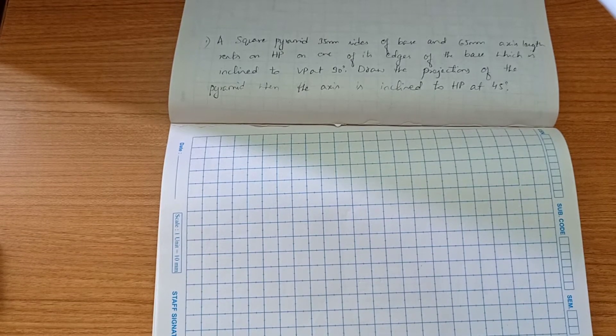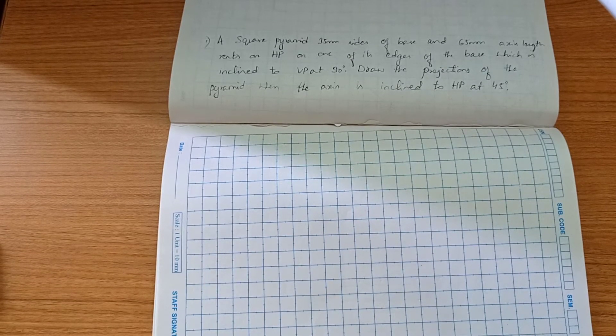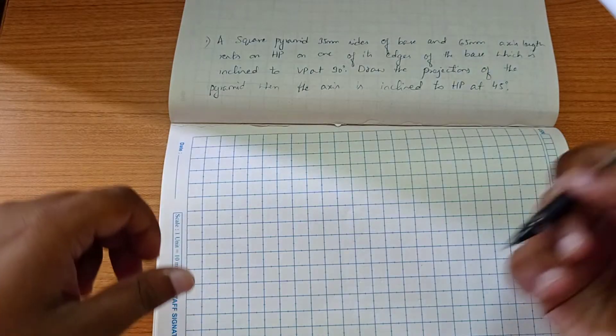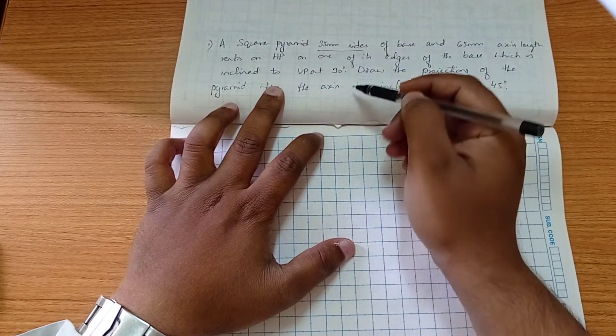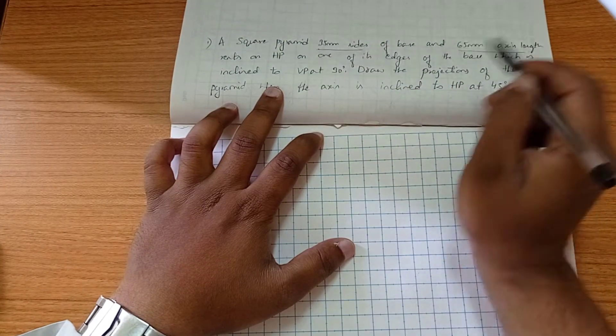Today we are going to start a new problem on a square pyramid. You have to construct a square pyramid of dimension 35mm base and 65mm axis length.